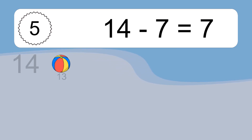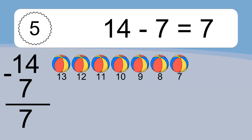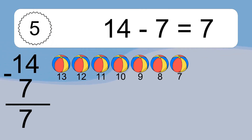14 minus 7 equals what? 14 minus 7 equals 7. Let's count it! 13, 12, 11, 10, 9, 8, 7.